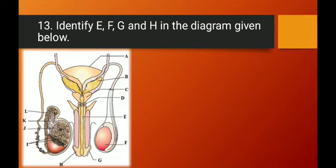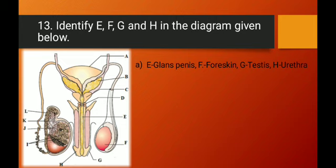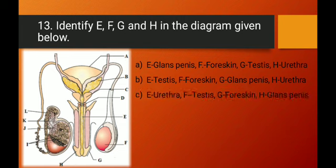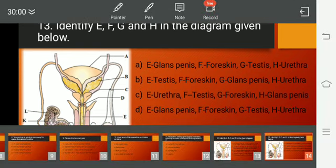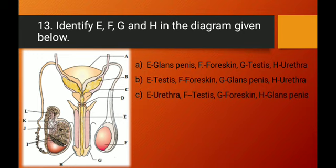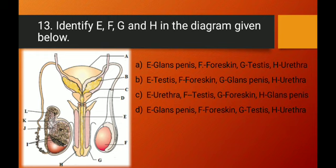Question number thirteen: identify E, F, G, and H in the same diagram. Labeling E represents the urethra. F represents the testis. G represents the foreskin. H represents the glans penis. Option C correctly identifies E as urethra, F as testis, G as foreskin, and H as glans penis. Option C is the right answer to question number thirteen.